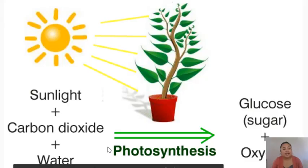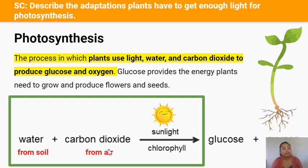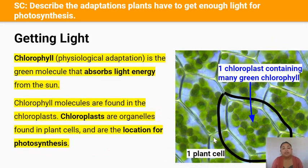Before we can discuss the different adaptations plants have, we need to talk about photosynthesis. Photosynthesis is the process in which plants use light, water and carbon dioxide to produce glucose and oxygen. This glucose will go on to produce the energy plants need to grow and produce flowers and seeds for reproduction. For this achievement standard, we just want to focus on the first half of this reaction equation: water, carbon dioxide, sunlight and chlorophyll.